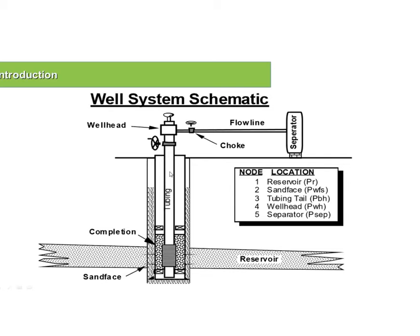Usually the separator pressure is like 70 or 100 psi, and we have the fluid moving through this flow line, which defines our wellhead pressure in order for the fluid to move in that direction. The fluid moving through the tubing has certain pressure losses, which give us a certain PWF and a certain reservoir pressure. We will see in detail what nodal analysis is about.